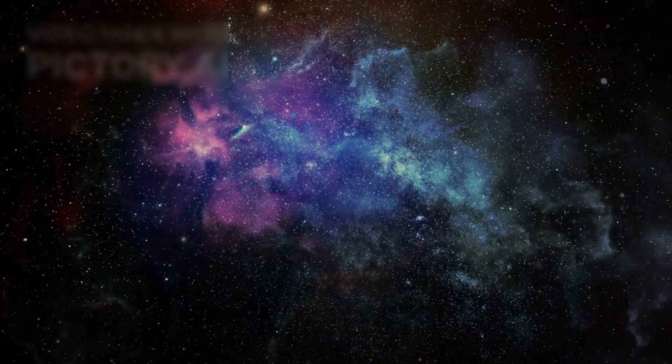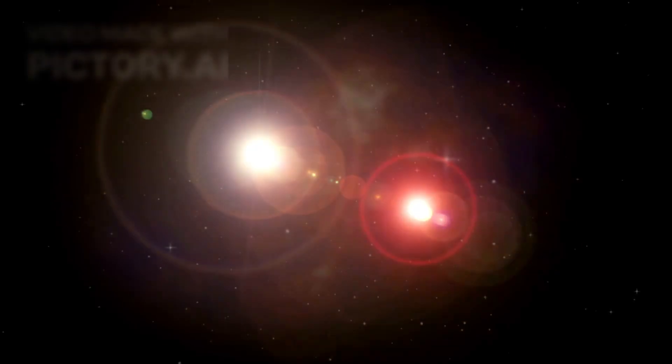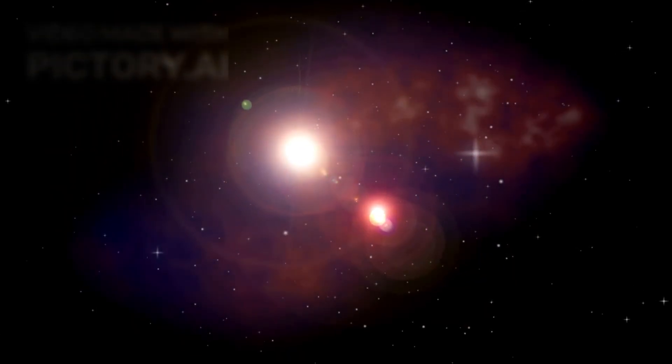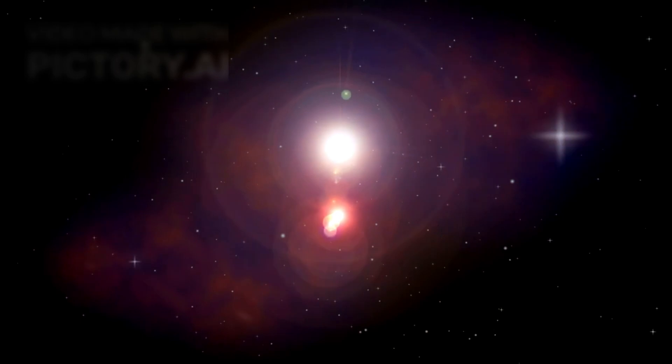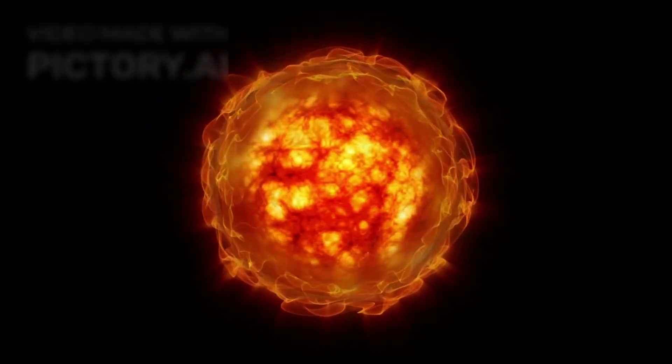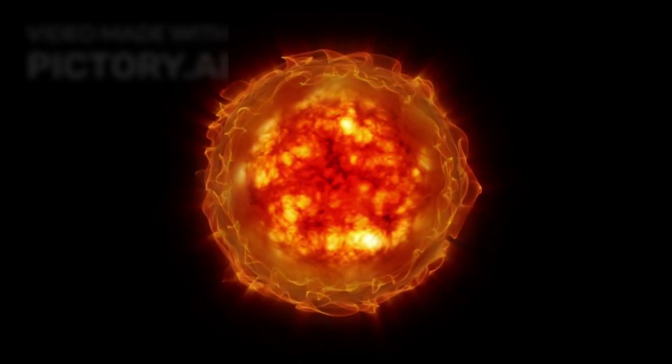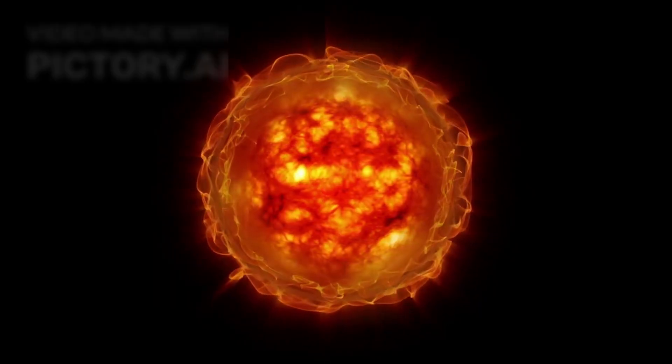Betelgeuse sits in the shoulder of the Orion constellation, but it is no ordinary star. More than 700 times the size of our Sun and about 20 times as massive, it is a behemoth in its final chapter. For decades, scientists have monitored its erratic behavior: the swelling and shrinking, the sudden dimming, the massive eruptions of material into space.